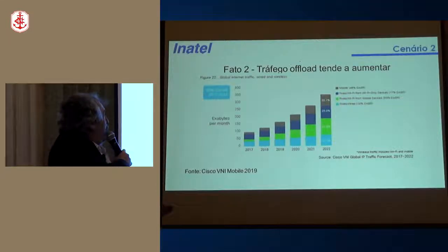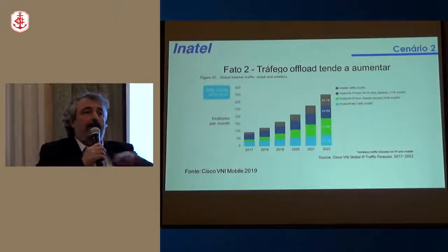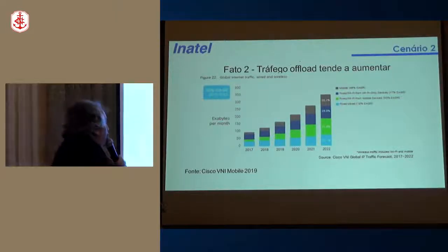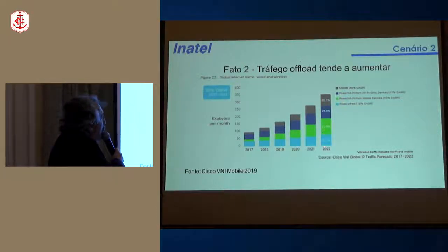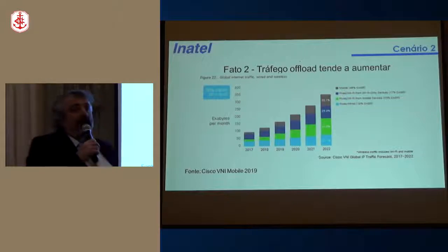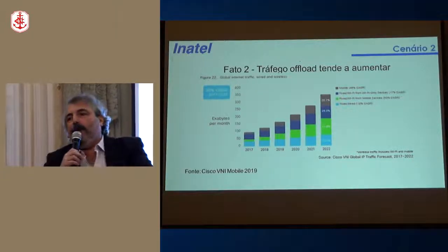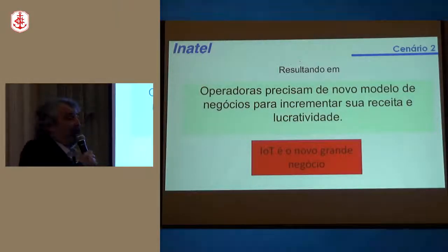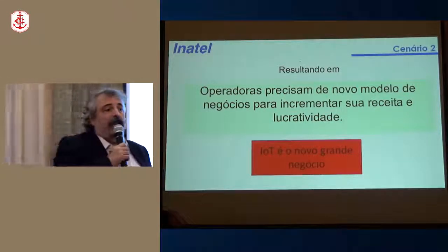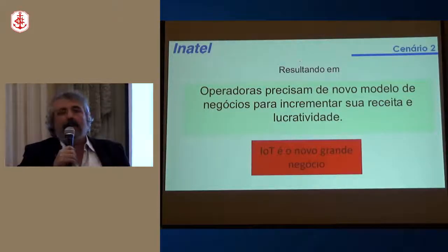O segundo fato é que o tráfego offload — escoado sem uso da rede móvel, por exemplo via Wi-Fi — tende a aumentar. Dado da Cisco de 2019 mostra que um percentual significativo do tráfego será escoado em 2022 via Wi-Fi, representando perda de capacidade de arrecadação das operadoras. Isso resulta na necessidade de um novo modelo de negócio, e o IoT deve ser o novo grande negócio em telecomunicações.